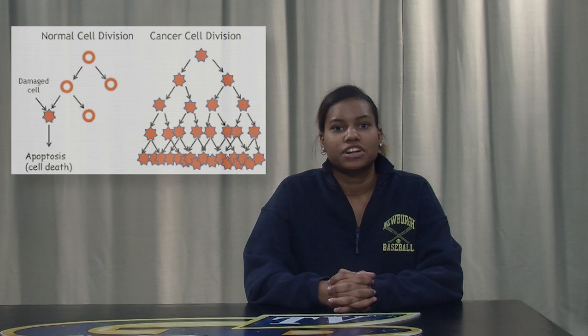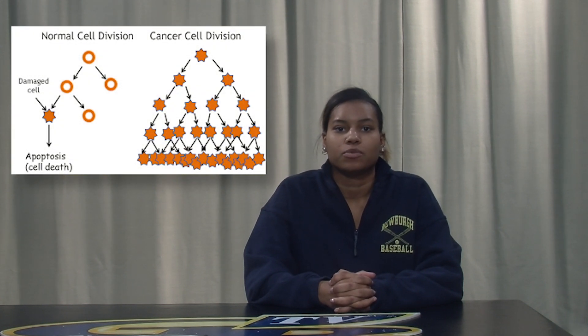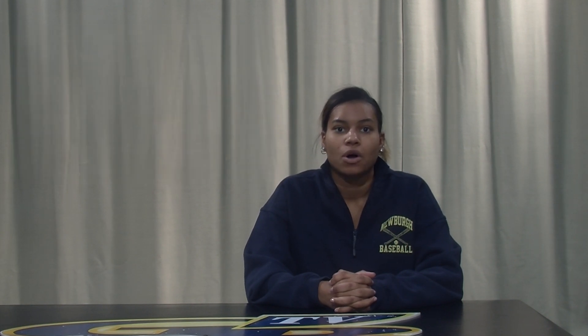Now let's discuss what cancer actually is. Cancer happens when cells are not normal and grow at a very fast rate. Unlike normal cells that grow and divide and eventually die, cancer cells divide out of control and don't die when they're supposed to. Often cancer cells clump together and create a tumor that damages the body's healthy tissues, causing the person to become very sick. Cancer cells spread by breaking off the tumor and traveling around the body to create new tumors.